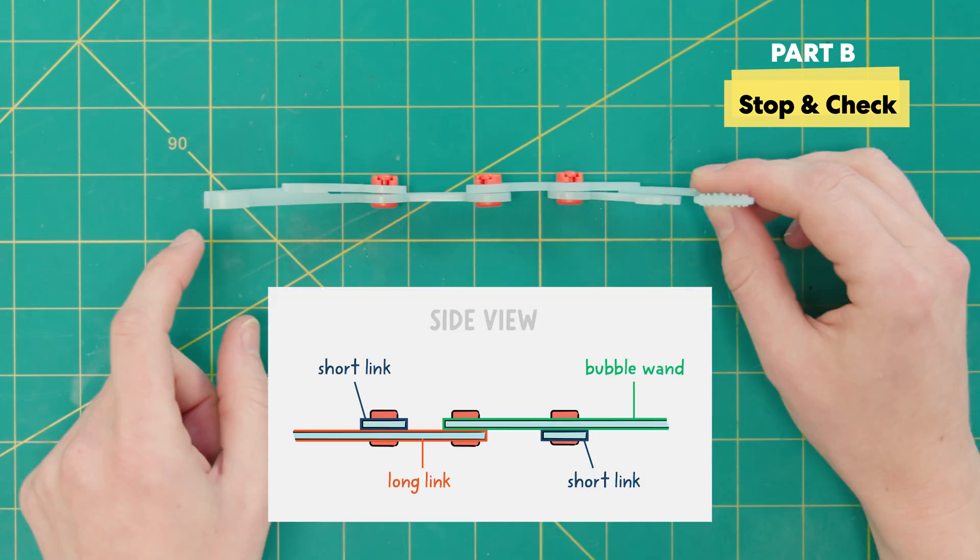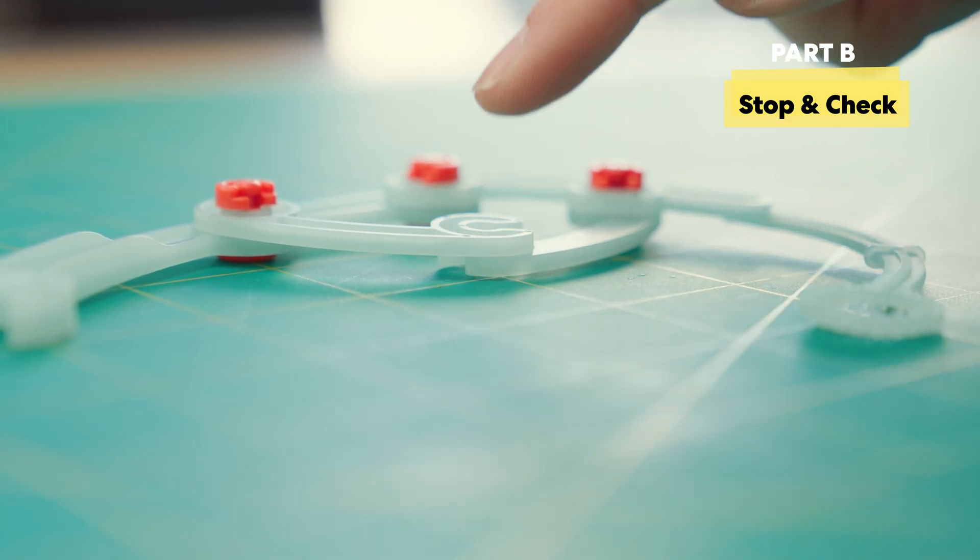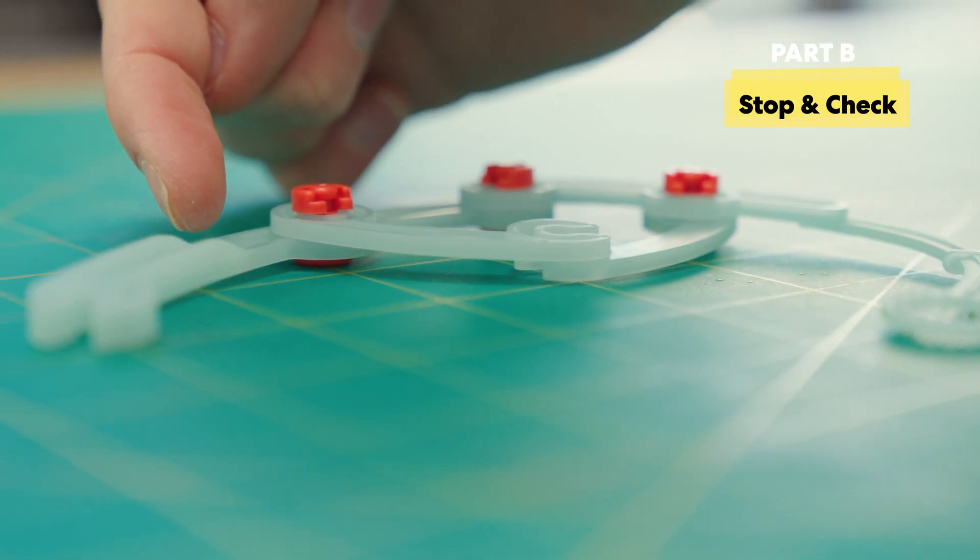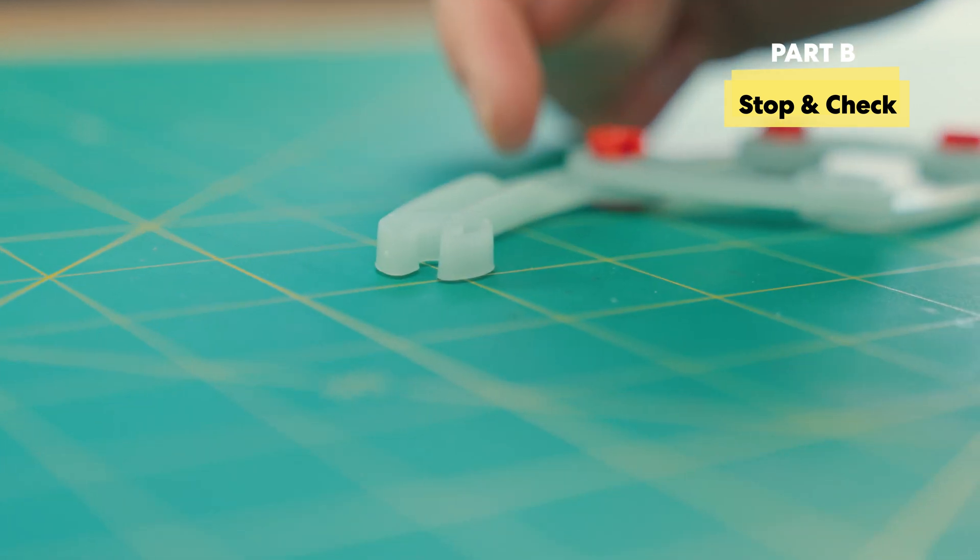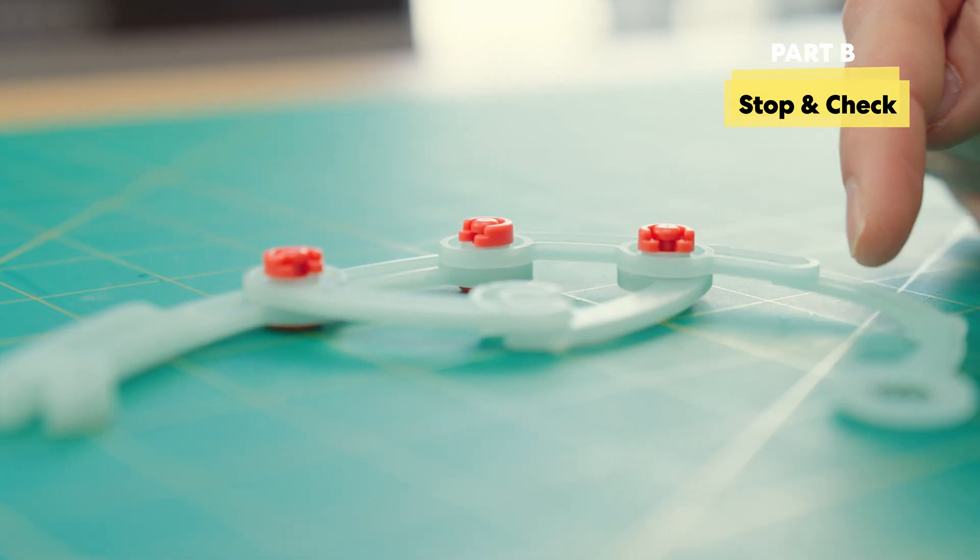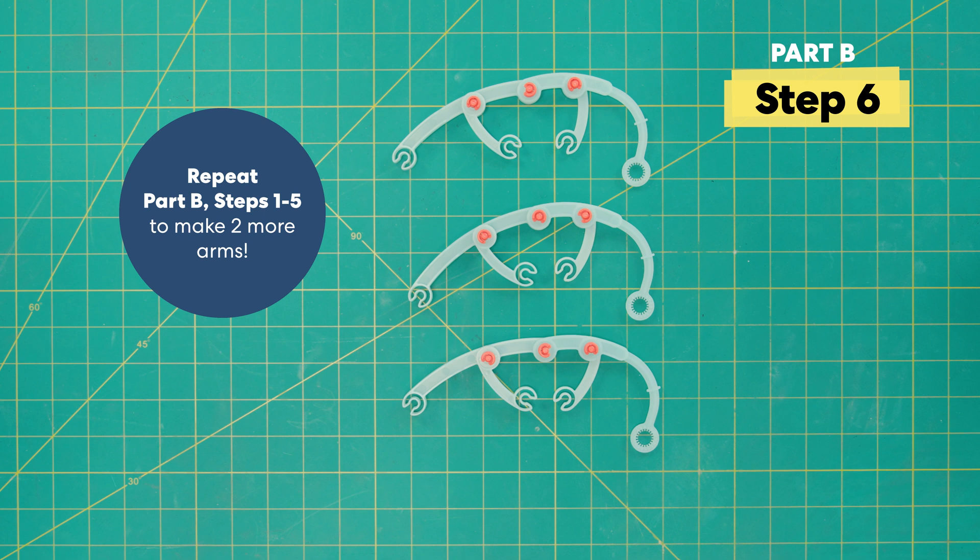So this may seem like a really small detail but the way things are layered is important. So if you can, go ahead and double check that everything's layered properly. Mostly you want to make sure that nothing's running into each other. Step six, you're going to go ahead and repeat steps one through five and make two more arms. Construct them in the exact same way. Ta-da!